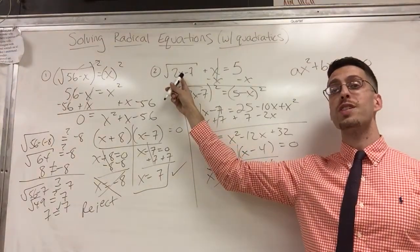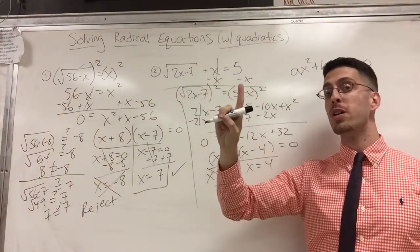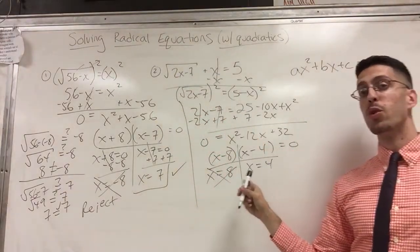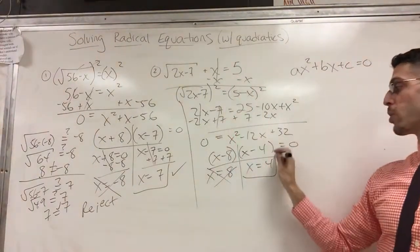Let's try 4. 2 times 4 is 8. 8 minus 7 is 1. Square root of 1 is still 1. 1 plus 4 is 5. This one works. I am good to go.